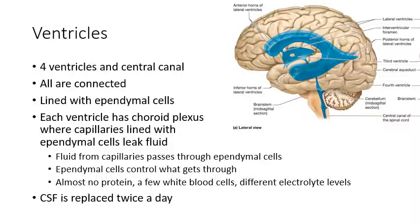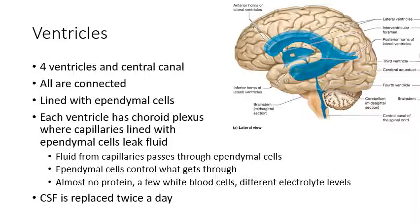Now for the ventricles: in the brain you have four ventricles all connected to each other, and in the spinal cord you have the central canal. You have a lateral ventricle in each hemisphere of the brain. Those are connected with the third ventricle, which is directly in the middle of the brain — the lateral ventricles actually curve around and continue. The third ventricle connects with the fourth ventricle, which is the space by the cerebellum, and that continues down into the central canal of the spinal cord.